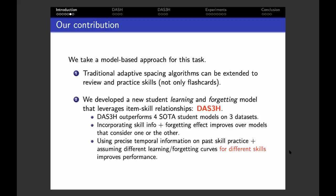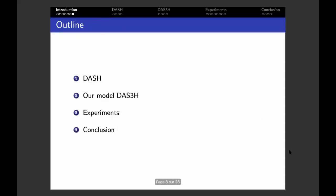We showed that using precise temporal information on past skill practice and assuming different learning and forgetting curves for different skills improves the model predictive performance. So this is basically the whole talk. Here I give you a brief outline of the rest of the presentation. First, I will present the DASH model, which was an inspiration for our DAS3H model. Then I will describe our new model, our experiments and results, and finally conclude this talk.